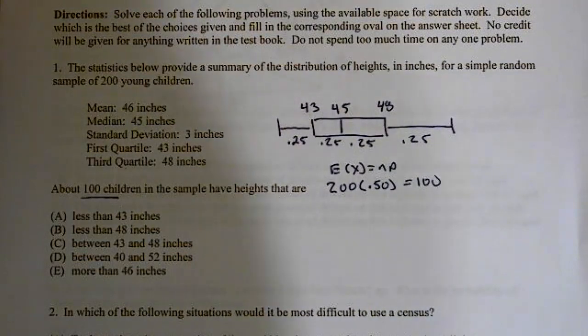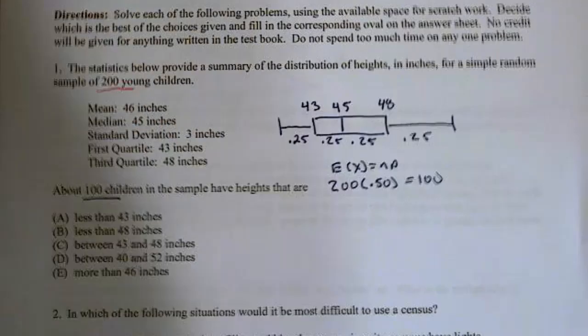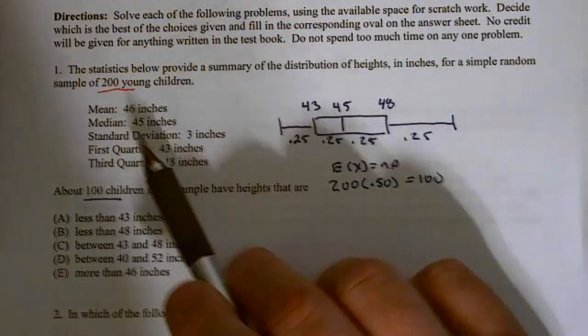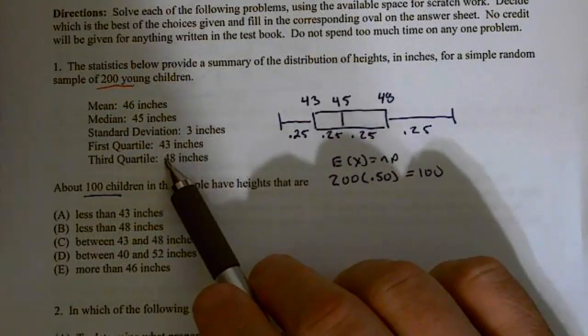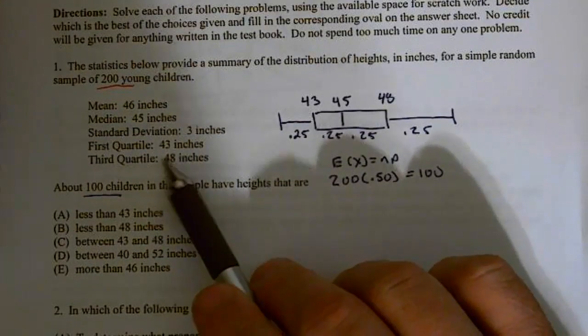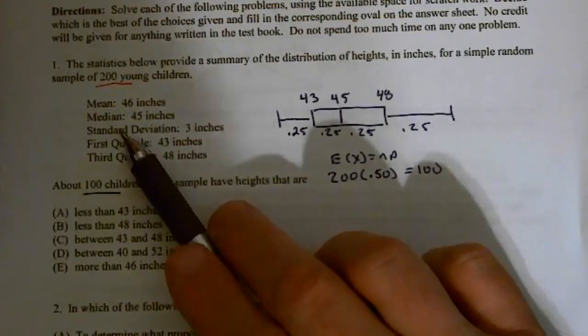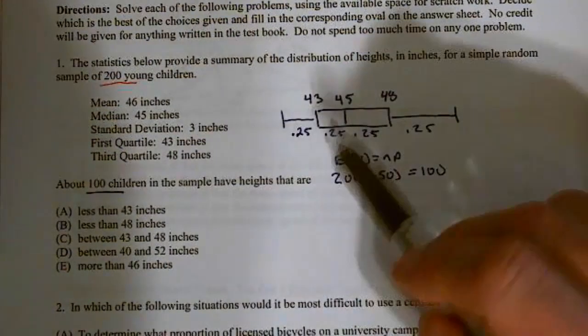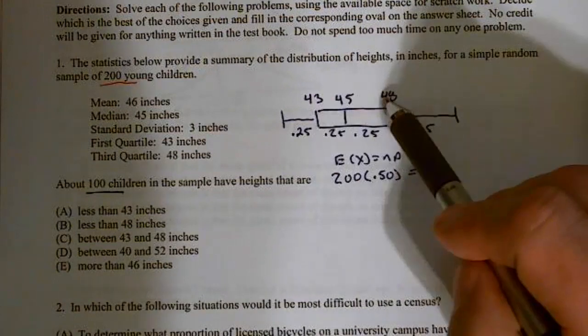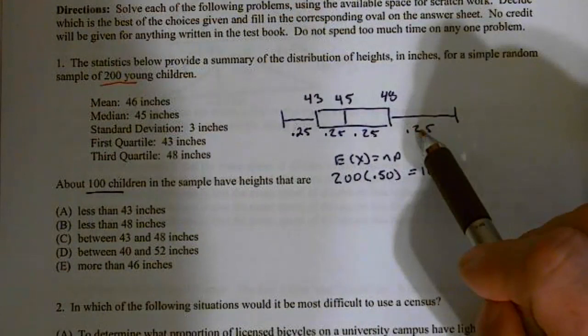The statistics below provide a summary of the distribution of heights in inches for a simple random sample of 200 young children. We have 200 children with a mean of 46, a median of 45, a standard deviation of 3, a first quartile of 43, and a third quartile of 48. Since we're talking about quartiles and medians, I decided to draw a box plot. There's my first quartile, there's my third quartile, there's my median, and I know that in each section I have 25% of my data.